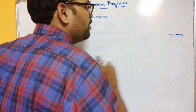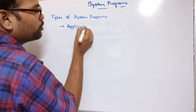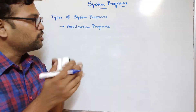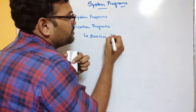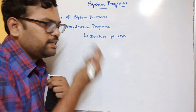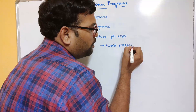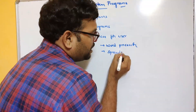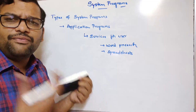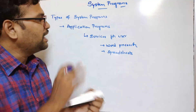The last category is application programs. This is somewhat different from system software — application programs provide services for users. For example, if you want to write a document you need a word processor, which is an example of an application program. Spreadsheets, video players, and audio players all come under application programs because they provide services for the users.